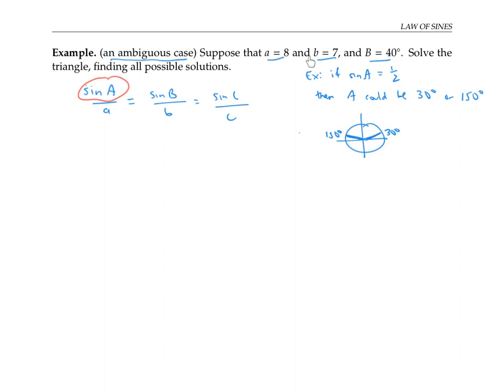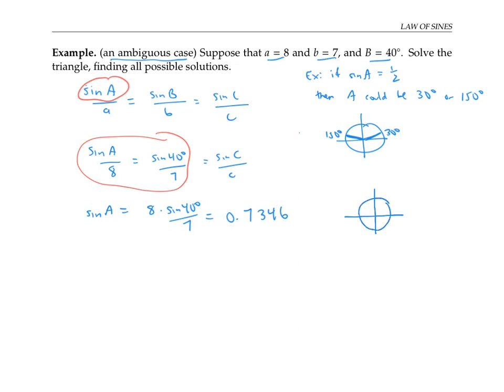Plugging in my given information into the law of sines, I'll focus on this portion of the equation, where there's only one unknown to solve for. First, I'll solve for sine of A, which is eight times sine 40 degrees over seven, which works out to 0.7346. From the unit circle, I can see that there'll be two possible angles with this sine, one in the first quadrant and one in the second quadrant. If I take sine inverse of both sides of my equation, I get the solution in the first quadrant, which is 47.27 degrees.